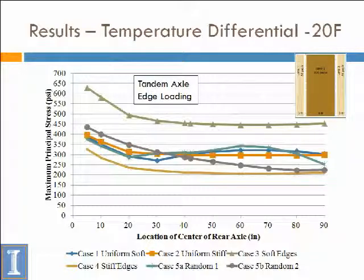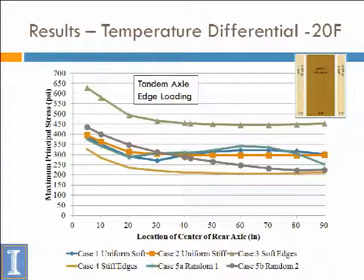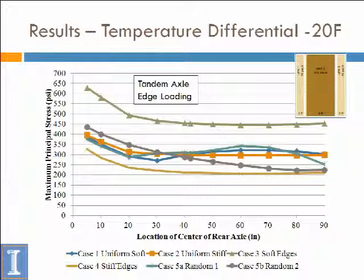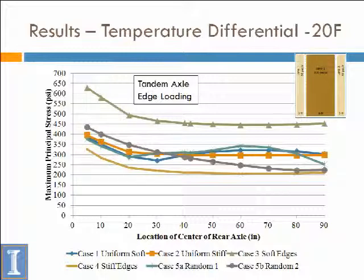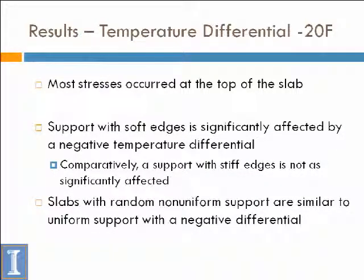For nighttime gradients — negative gradients — the soft edges again produce the highest stresses. That makes sense: the corners and edges lift off, you have a gap, and the stresses go much higher. Notably, stiff edges — meaning a stiff K-value and a soft middle — actually has the lowest stresses. So sometimes it makes sense to have a stiff edge versus a soft edge. The uniform soft case isn't very high at all, so uniform soft isn't the most critical case.